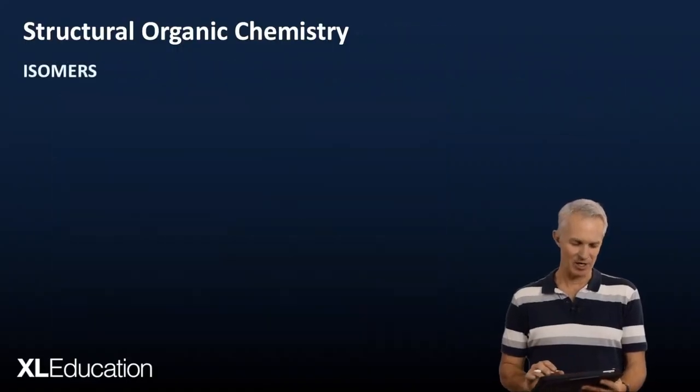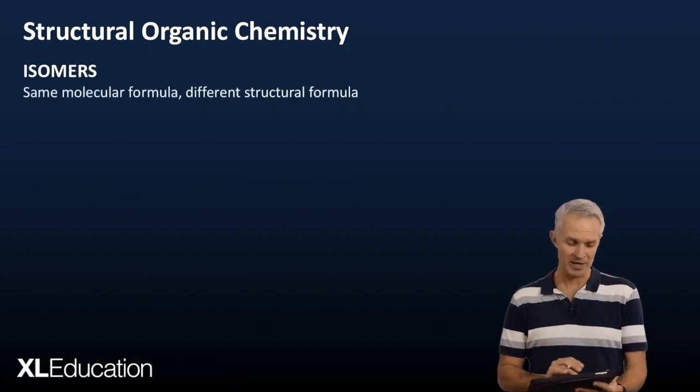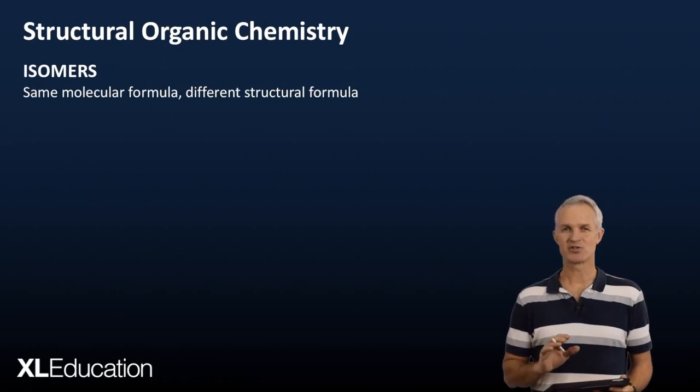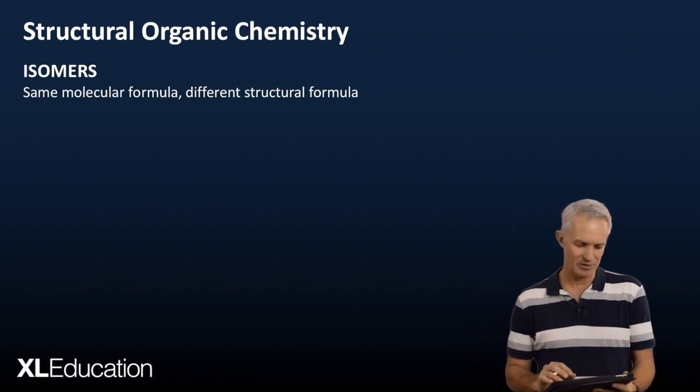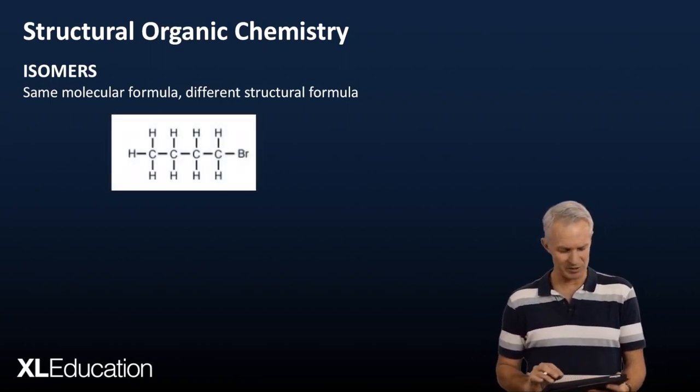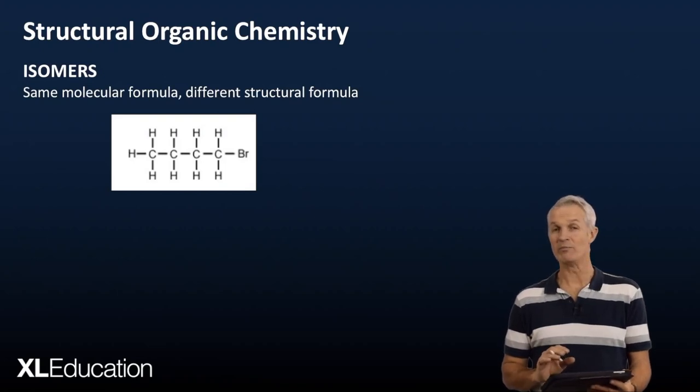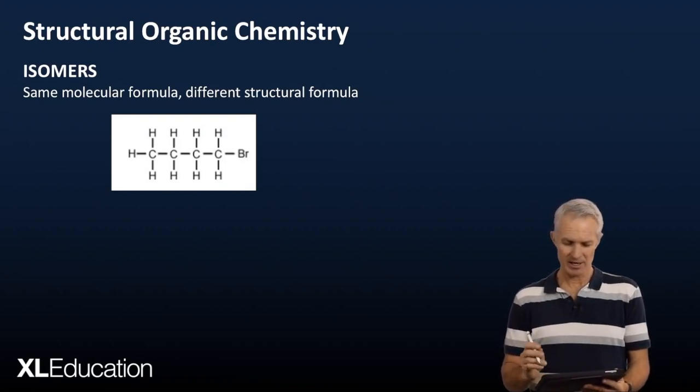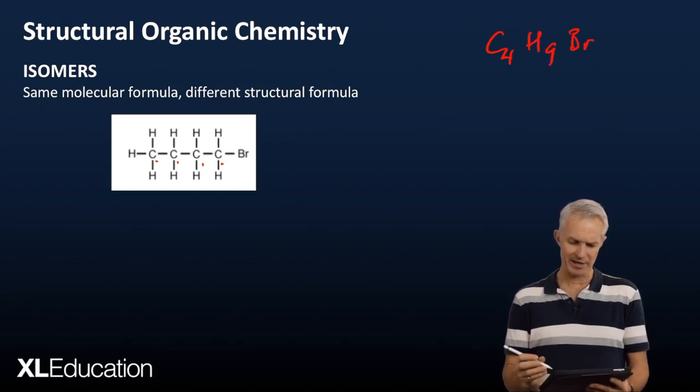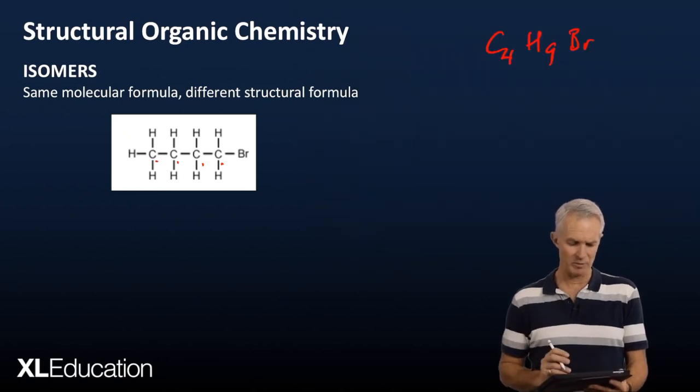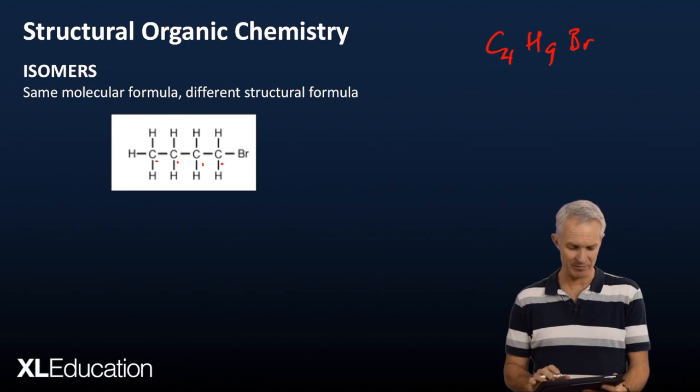Last thing I'm going to have a quick look at in this video is isomers. Now, what is an isomer? An isomer is something that has the same molecular formula, but a different structural formula. It's like the same ingredients, but just putting it together in a slightly different way. So what we've got here, a little example, is one-bromobutane. With a bromo on the end. Let's have a look at the ingredients. We've got one, two, three, four carbons. We've got nine hydrogens, and we've got a bromine. So that would be the molecular formula. Now, a structural formula would be putting that together in a different way. Let's see a couple of examples of how this could be done.